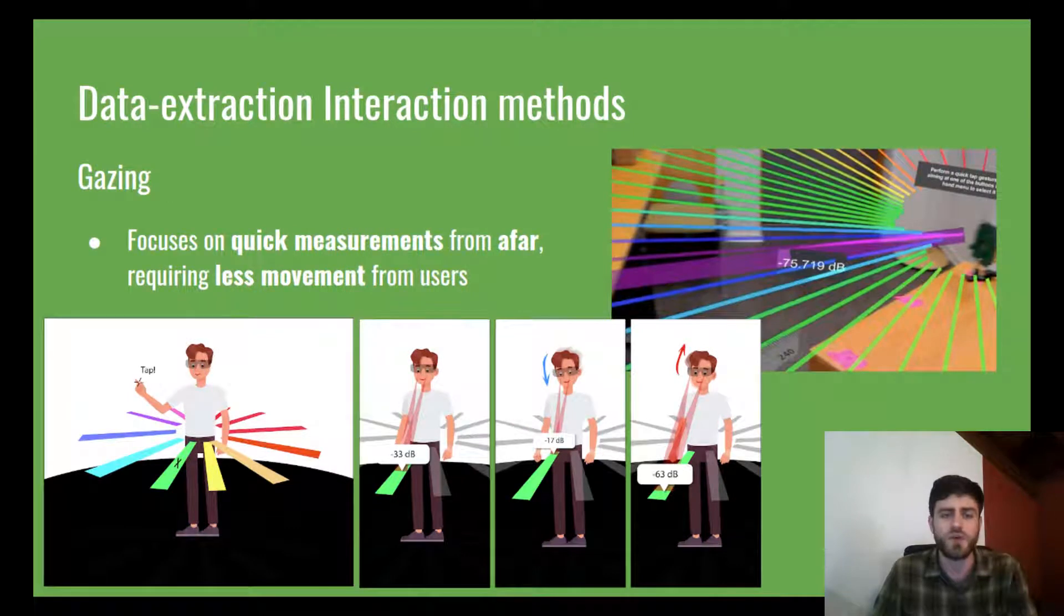The next one is called gazing. The user can pick different points of the vectors by simply centering their vision onto it.